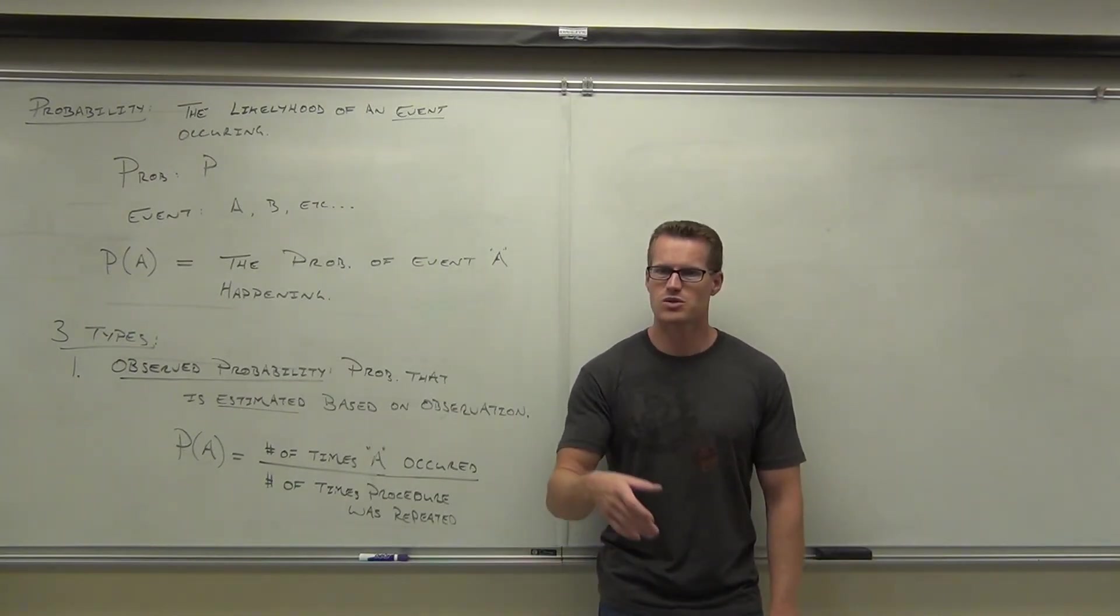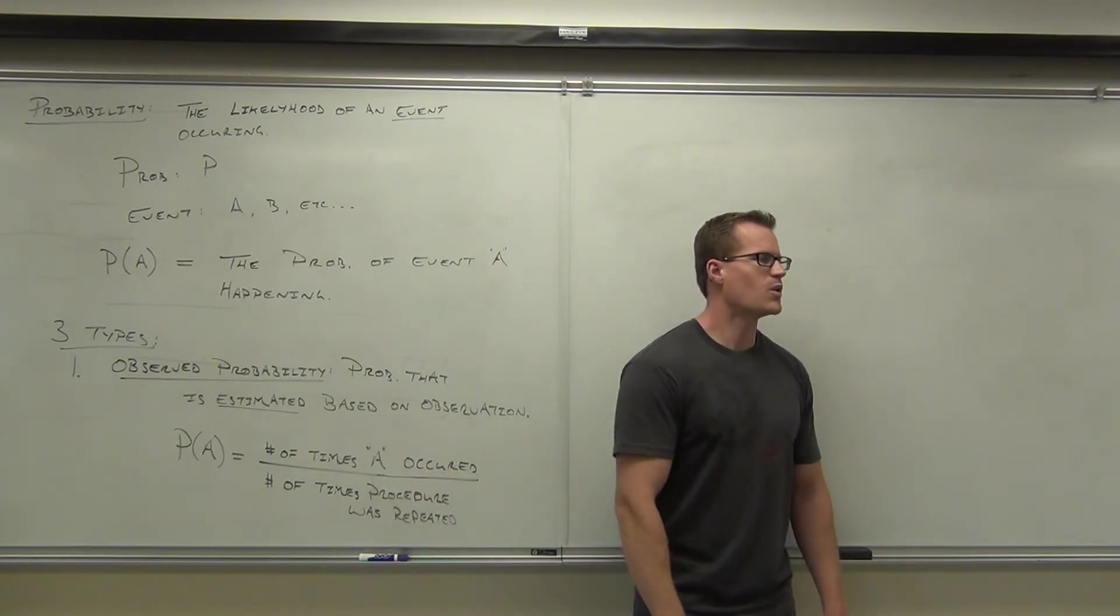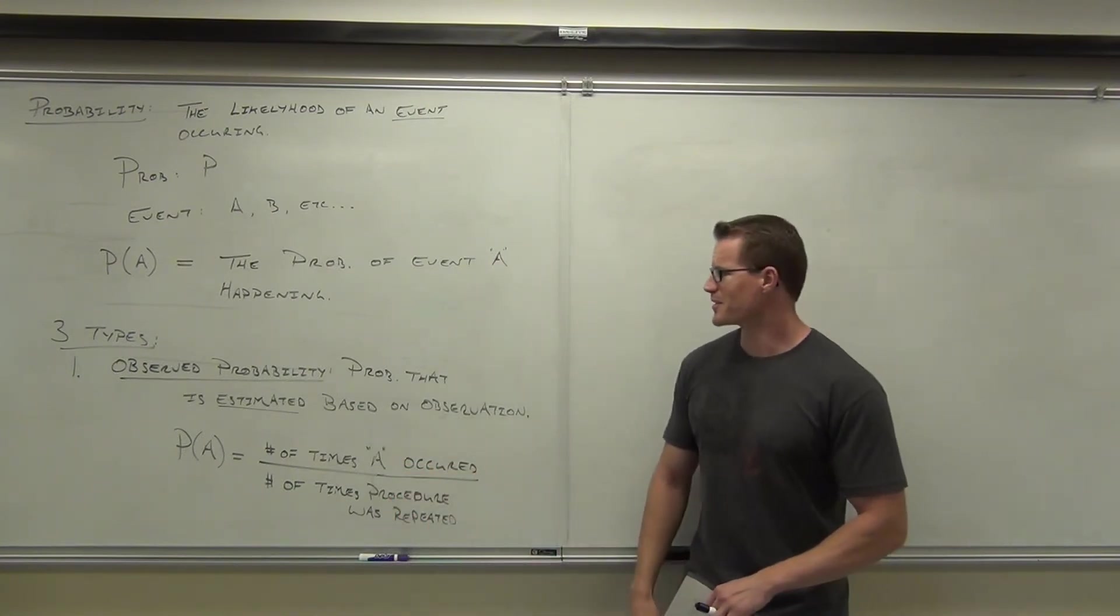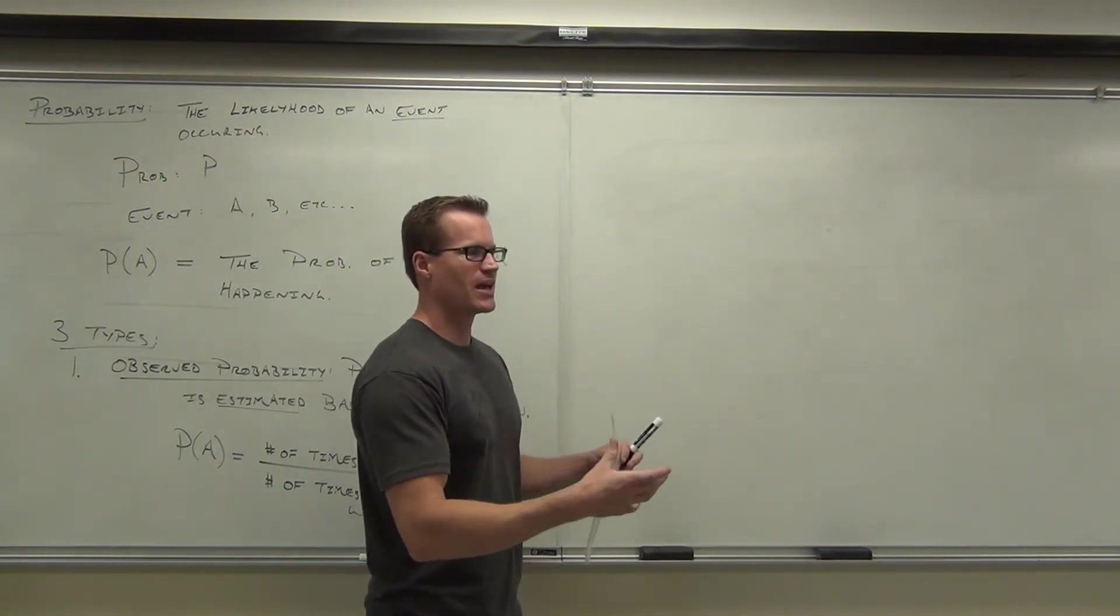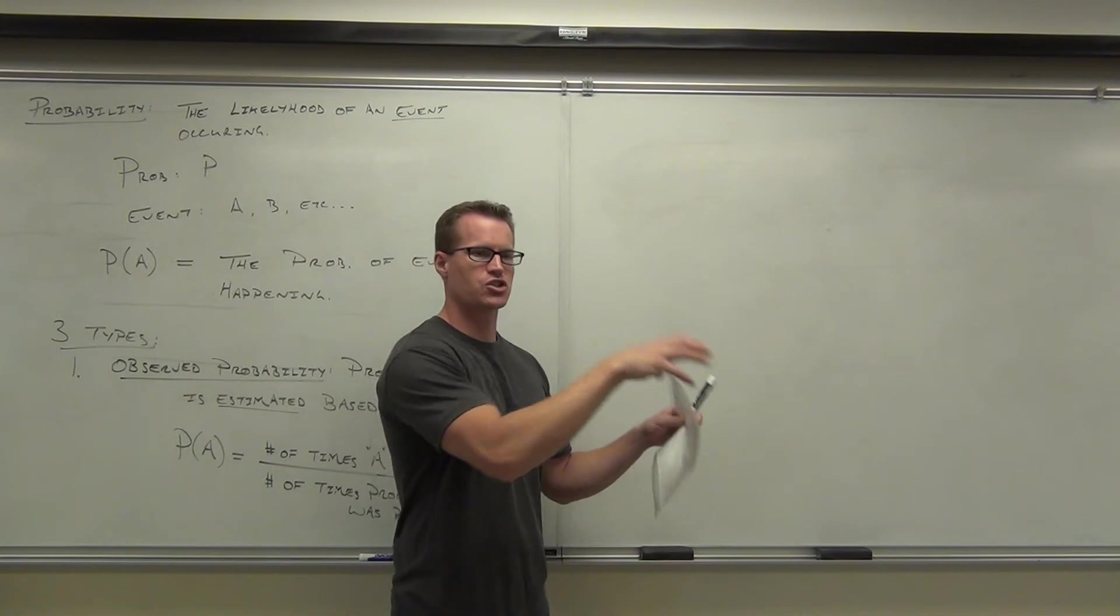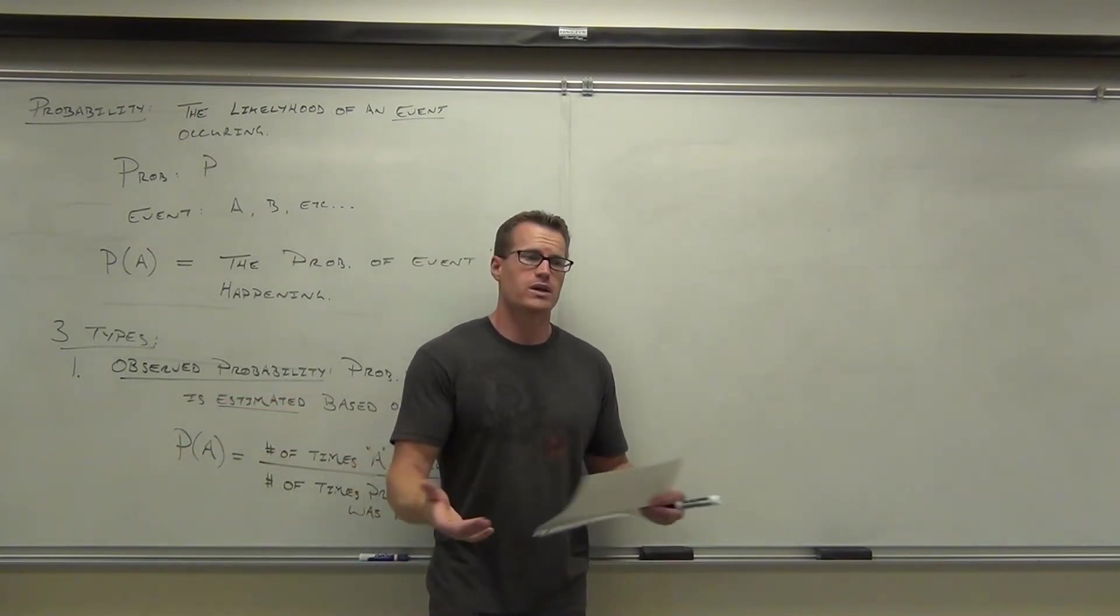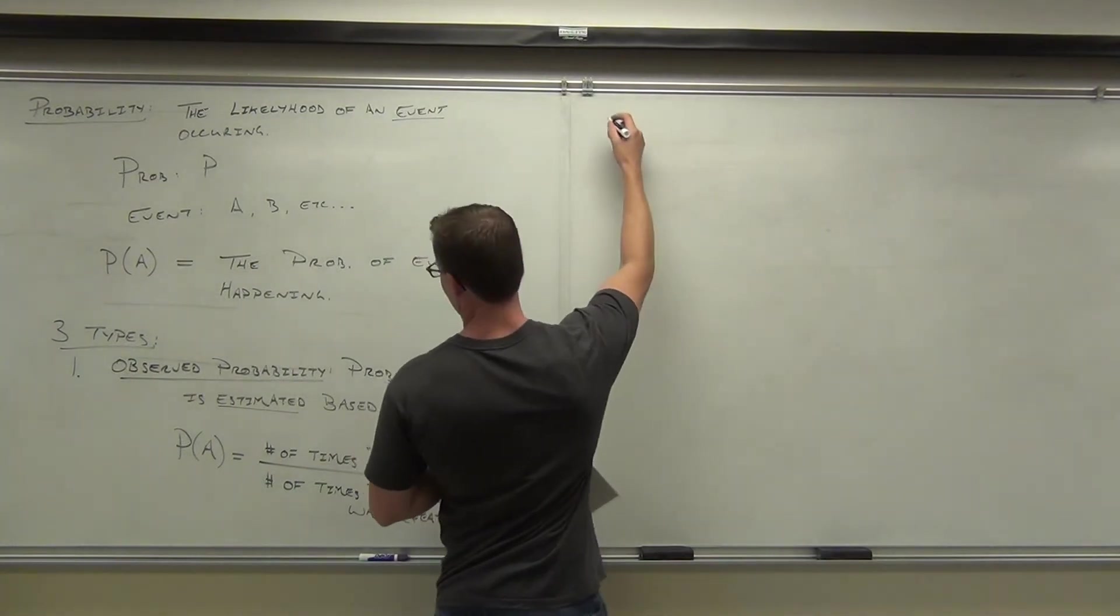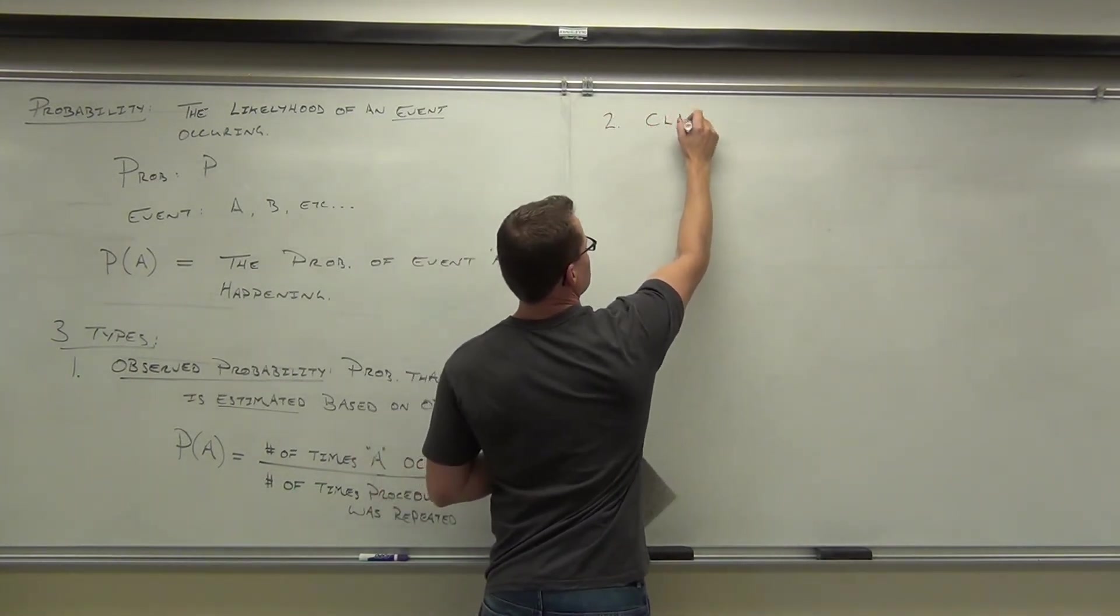You're not going to get exactly 5 heads every single time. Sometimes you'll get 6 heads out of 10. Sometimes you get 9. Sometimes you get all 10. Sometimes you get 1. That's the classical probability as opposed to the observed. Classical is what should happen every time. Observed is if you actually do the experiment, what does happen every time. So let's talk about classical. We've pretty much just discussed it.